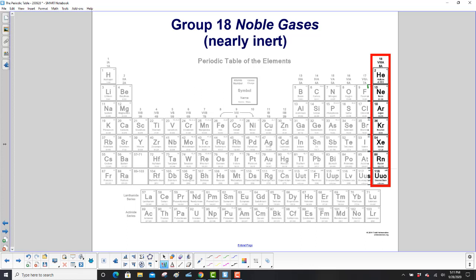Group 18 are the noble gases. They are nearly inert. They don't react very well at all with other elements. You have helium, neon, argon, krypton, xenon, radon, and then another one here at the bottom.